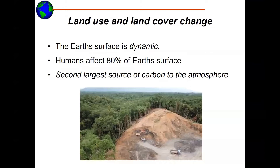So why is this so important? The Earth's surface is dynamic — it is under constant change. It's not like the vegetation is static and villages are constantly like they are. It is a dynamic place. In order to study these dynamics, we need to understand the changes going on on the land surface. And today, humans affect 80% of the Earth's surface, so we have a major influence on what's going on.